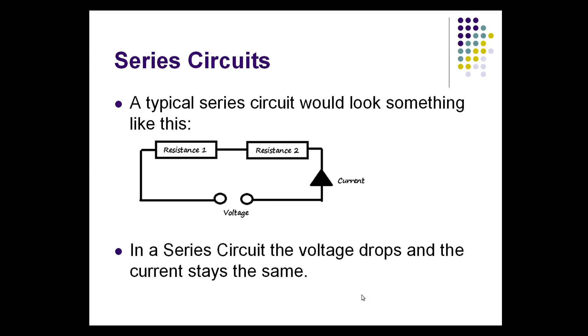In a series circuit, the current will stay the same and the voltage will drop. So this is the typical layout of a series circuit. You have voltage, current and your two or more values of resistance. For this example, we have two values of resistance.